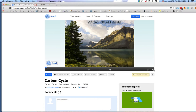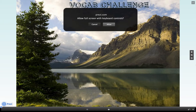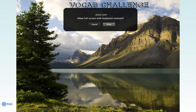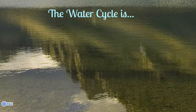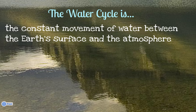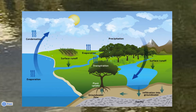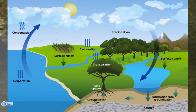Alright everybody, the first thing we're going to do this afternoon is review what we did last time. Please take out your notebooks, keep them on your desk but don't open them yet — we're going to see what you guys remember from last week. So first of all, who can tell me what is the water cycle? Very good. The water cycle is the constant movement of water between the earth's surface and the atmosphere — it's the recycling of water on our planet. Now here's a picture that you should all have in your notes showing all the different phases of the water cycle.